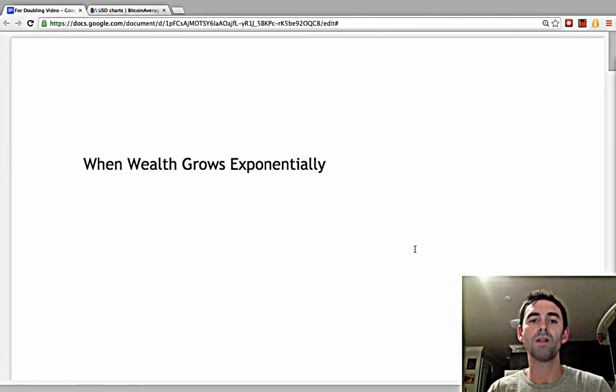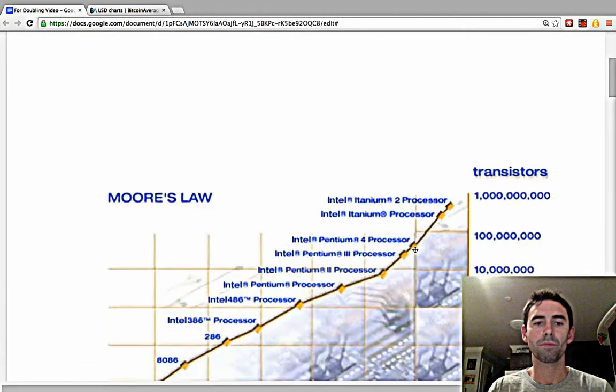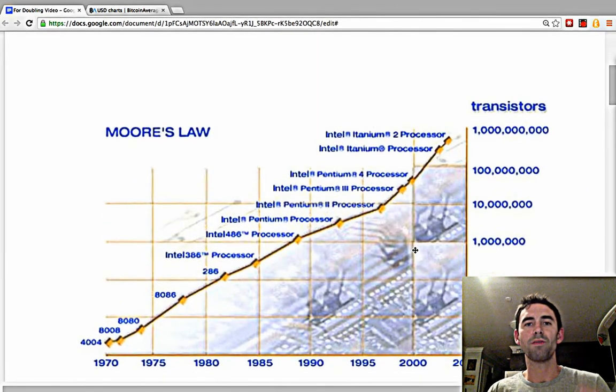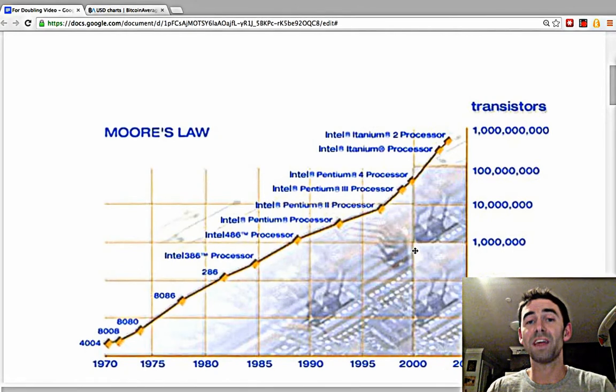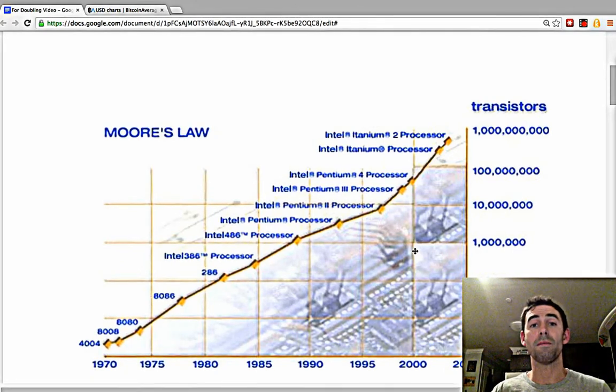This video is about when wealth grows exponentially. What is wealth? Wealth is not money. Money is what allows us to buy wealth. Wealth is things, goods and services that make us feel rich.